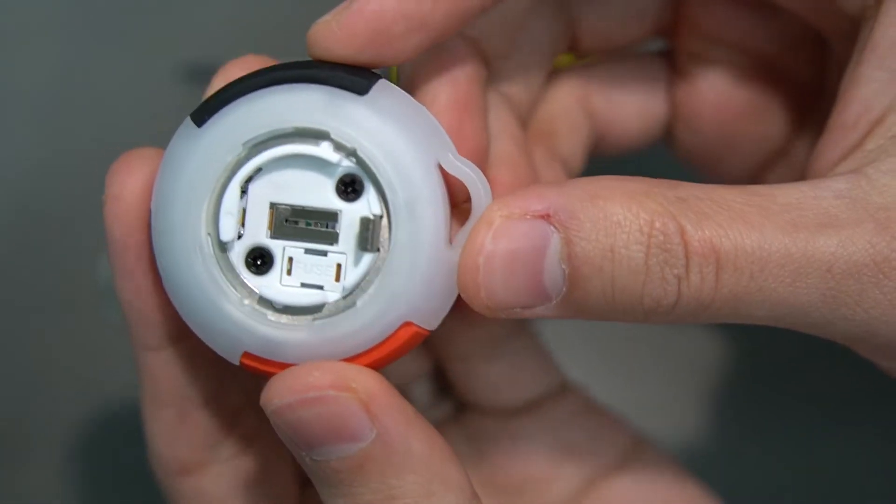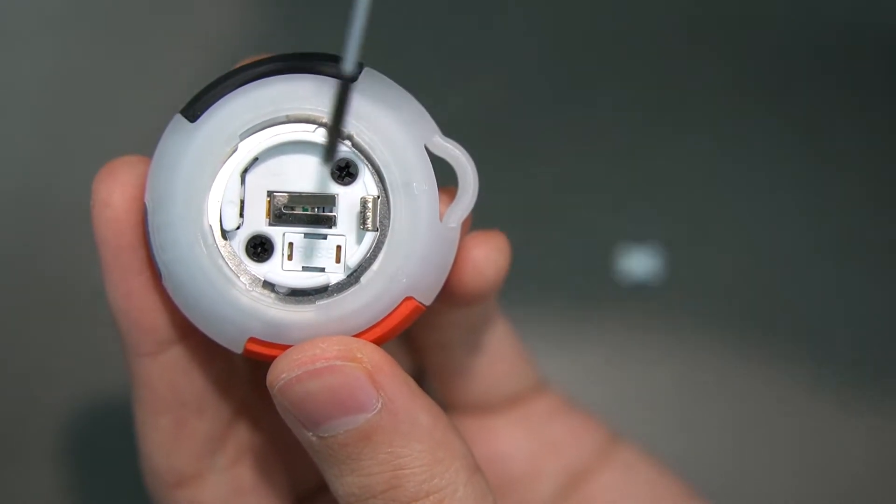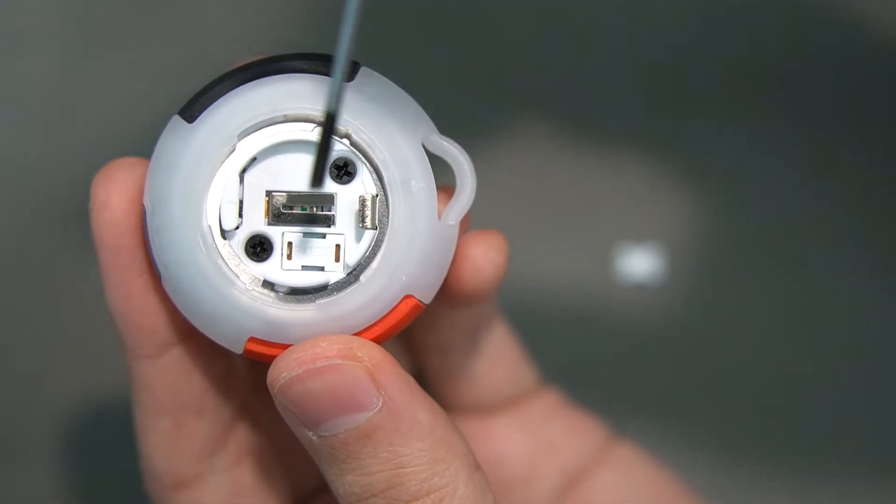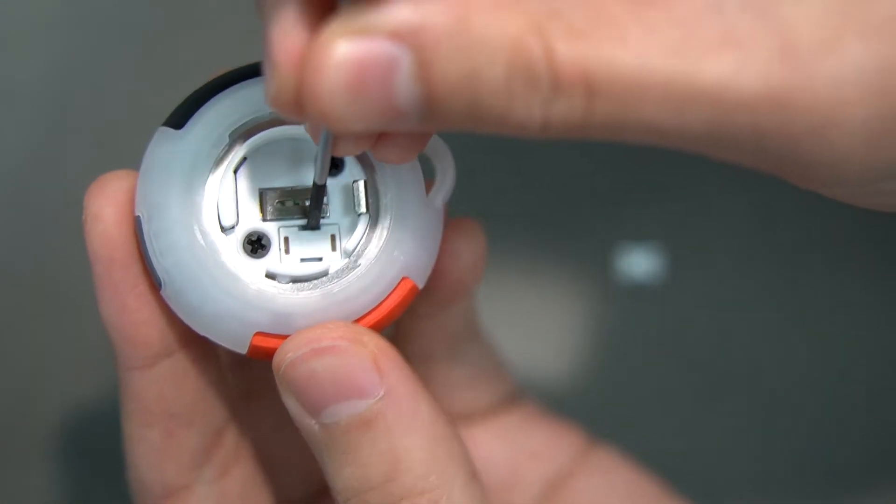The fuse is in there just at the bottom here. So you want to take your thin flathead screwdriver and just put it in the little gap at the top there. All you need to do is just push a little bit.